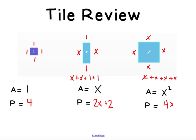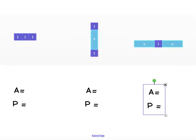So those are just the basic tiles. You might want to come back and refer to those as you work on some of the more difficult shapes. Then we can start looking at our combined tiles to find area and perimeter.